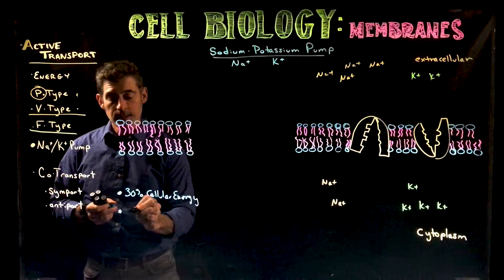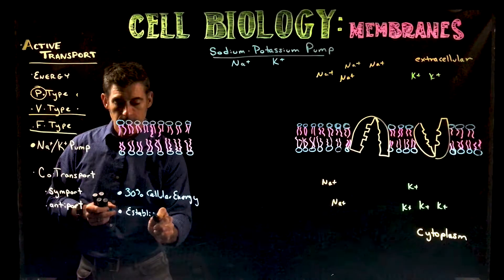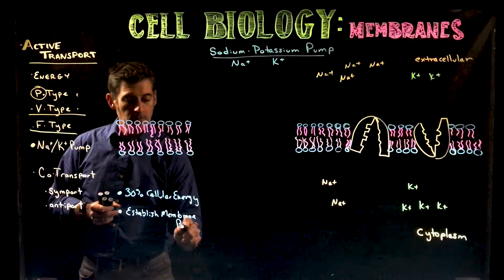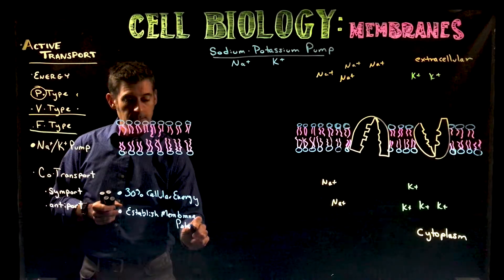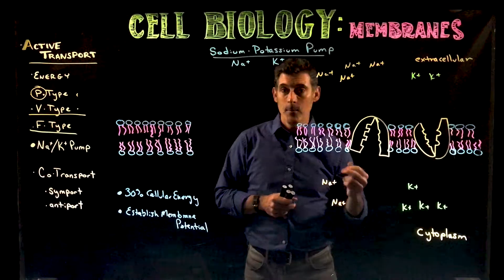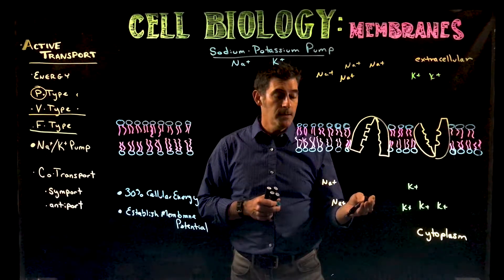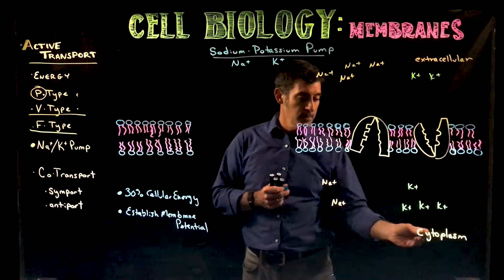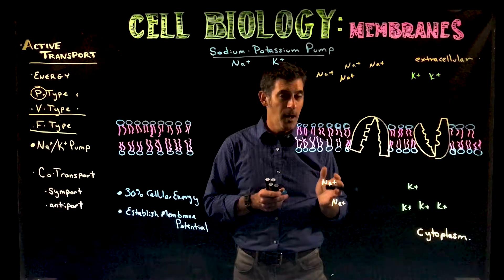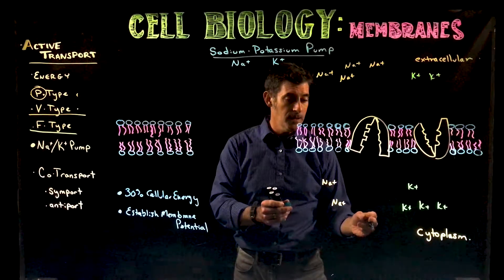The sodium-potassium pump helps establish membrane potential. Membrane potential is the difference in charge concentration across the membrane — one side being more positive and the other more negative. This is the cytoplasm, and this is the outside extracellular side. The side with the negative 70 millivolt difference is the interior of the cell.